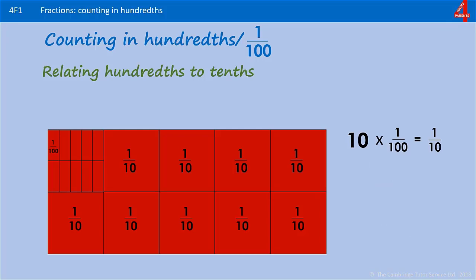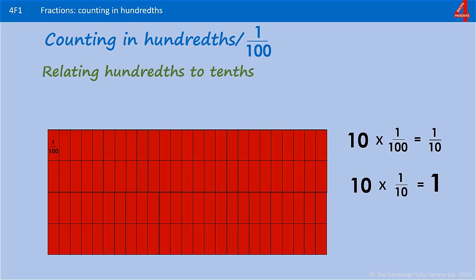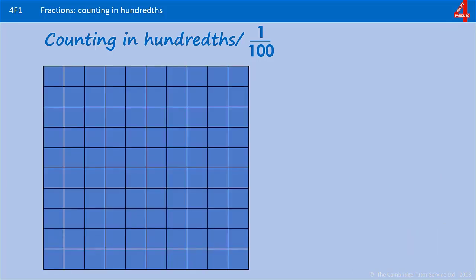Because we'd need ten lots of one hundredth to make one tenth, remember that ten lots of a hundredth is one tenth, and ten lots of one tenth is a whole one. That means if we divide every one of those tenths by ten, each tenth is filled with ten hundredths and the whole card is filled with one hundred hundredths.